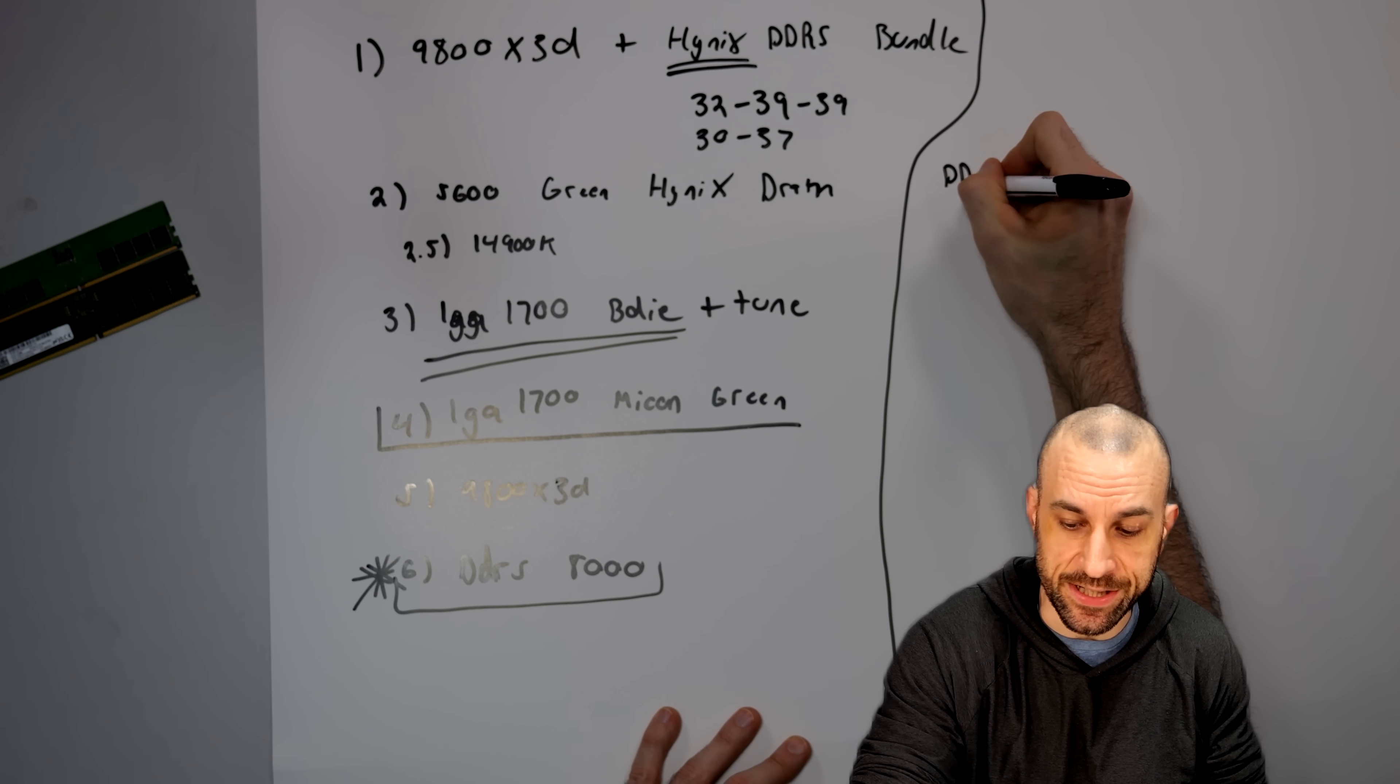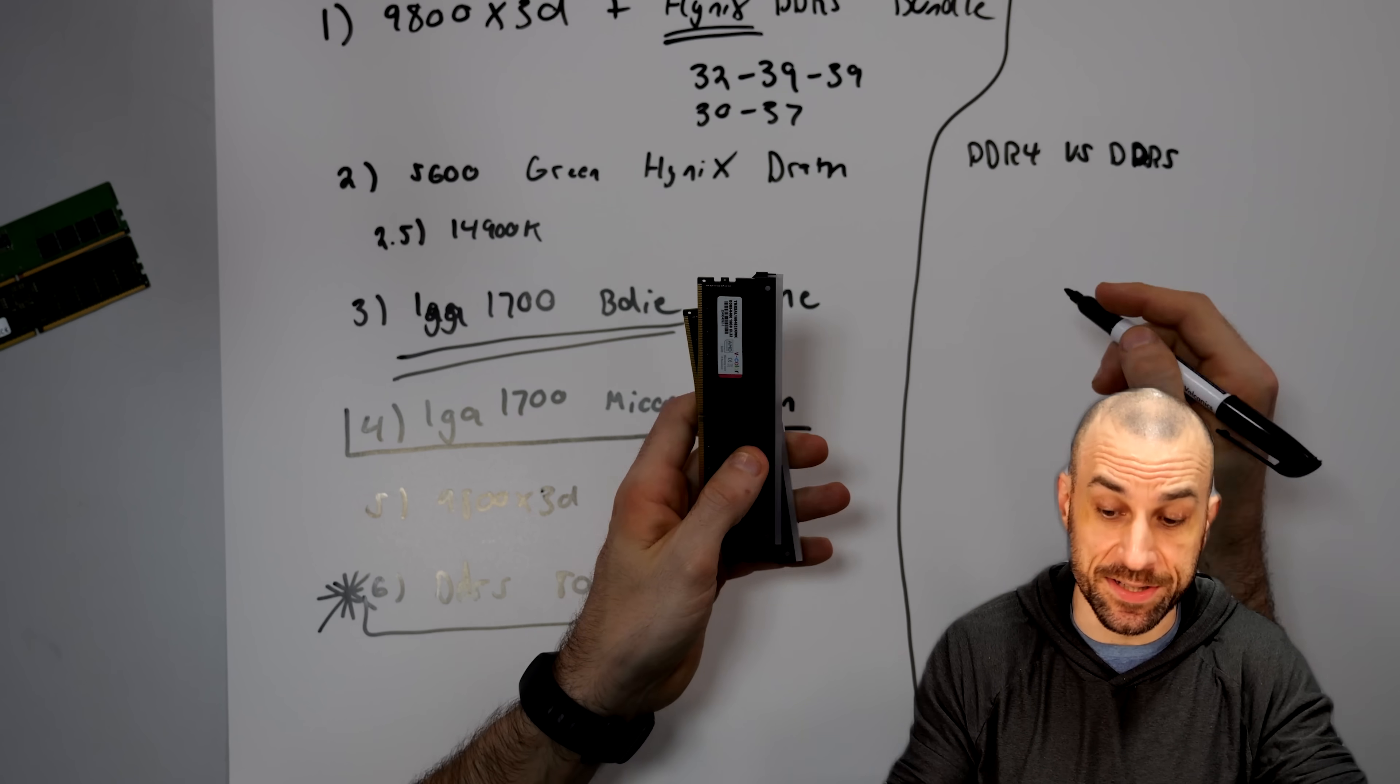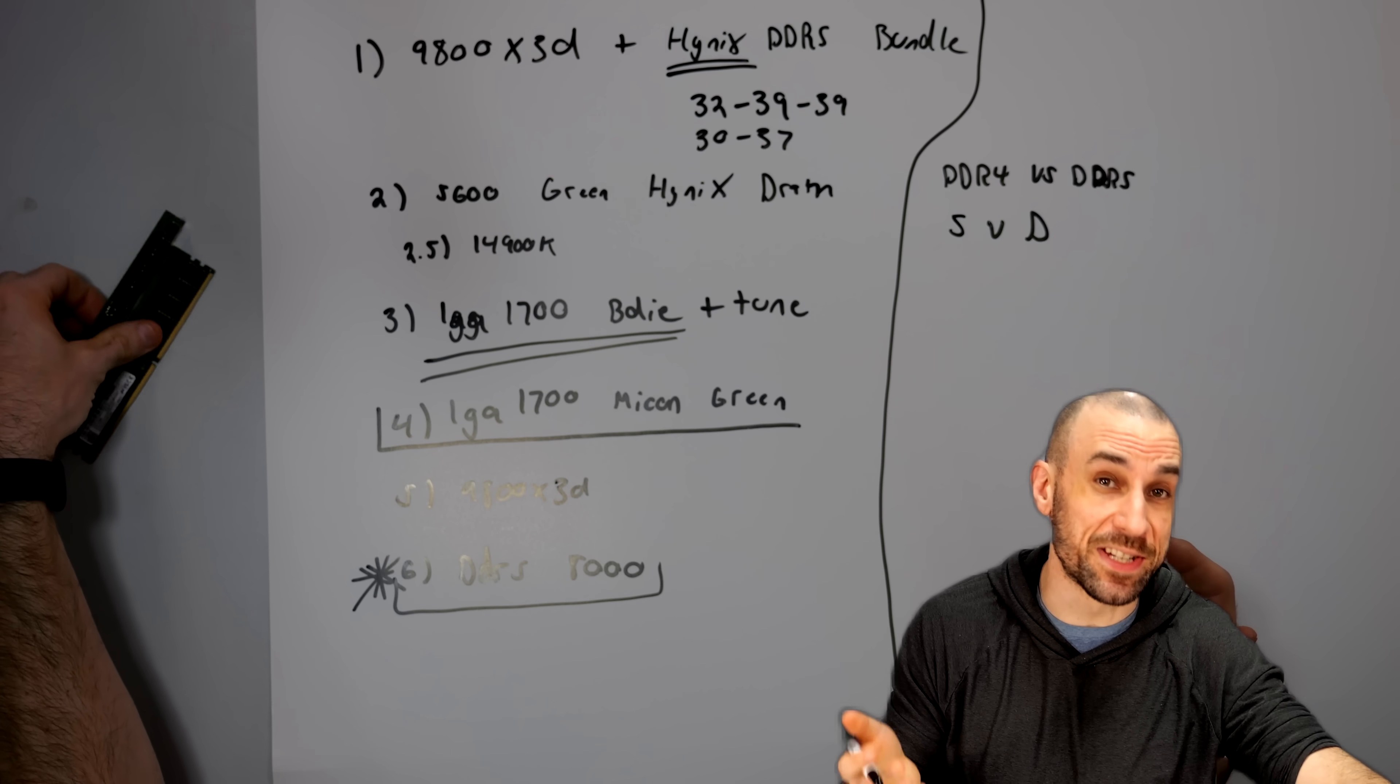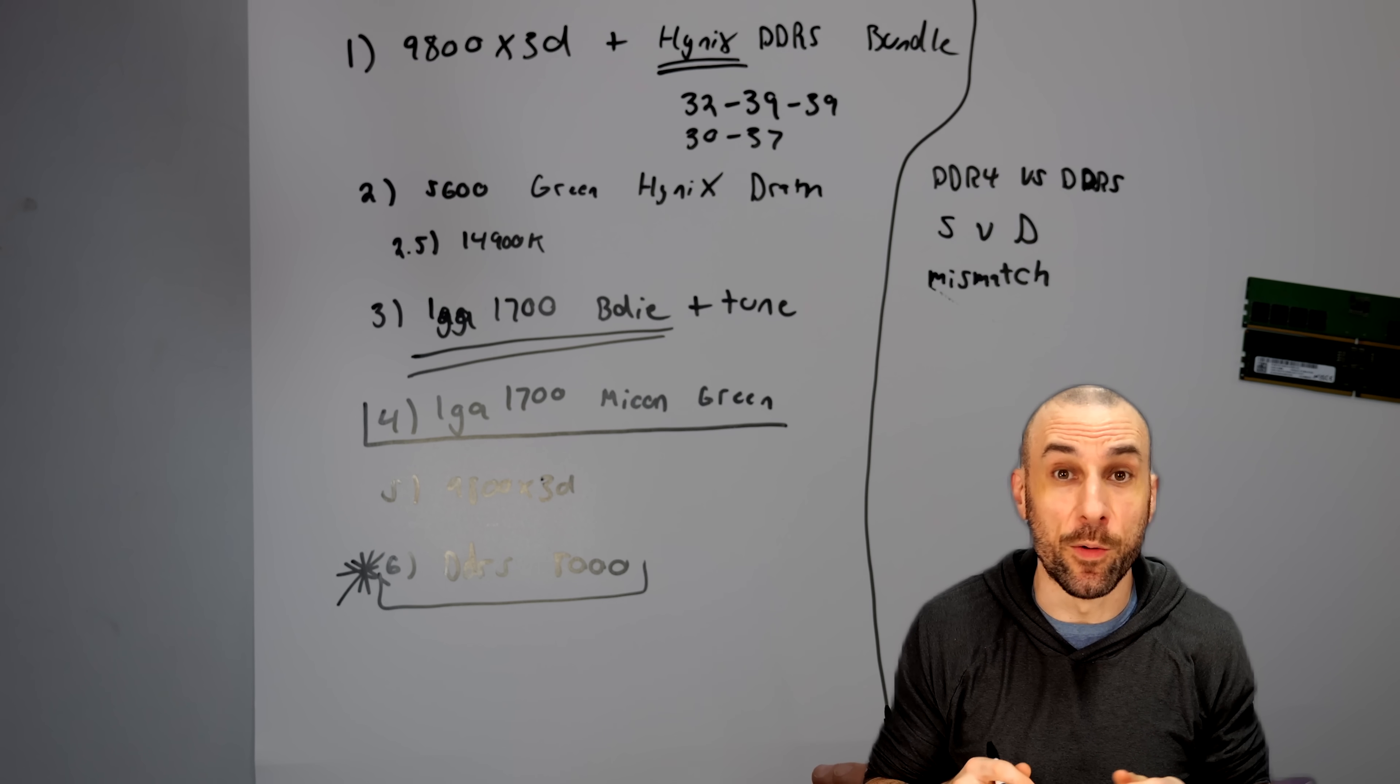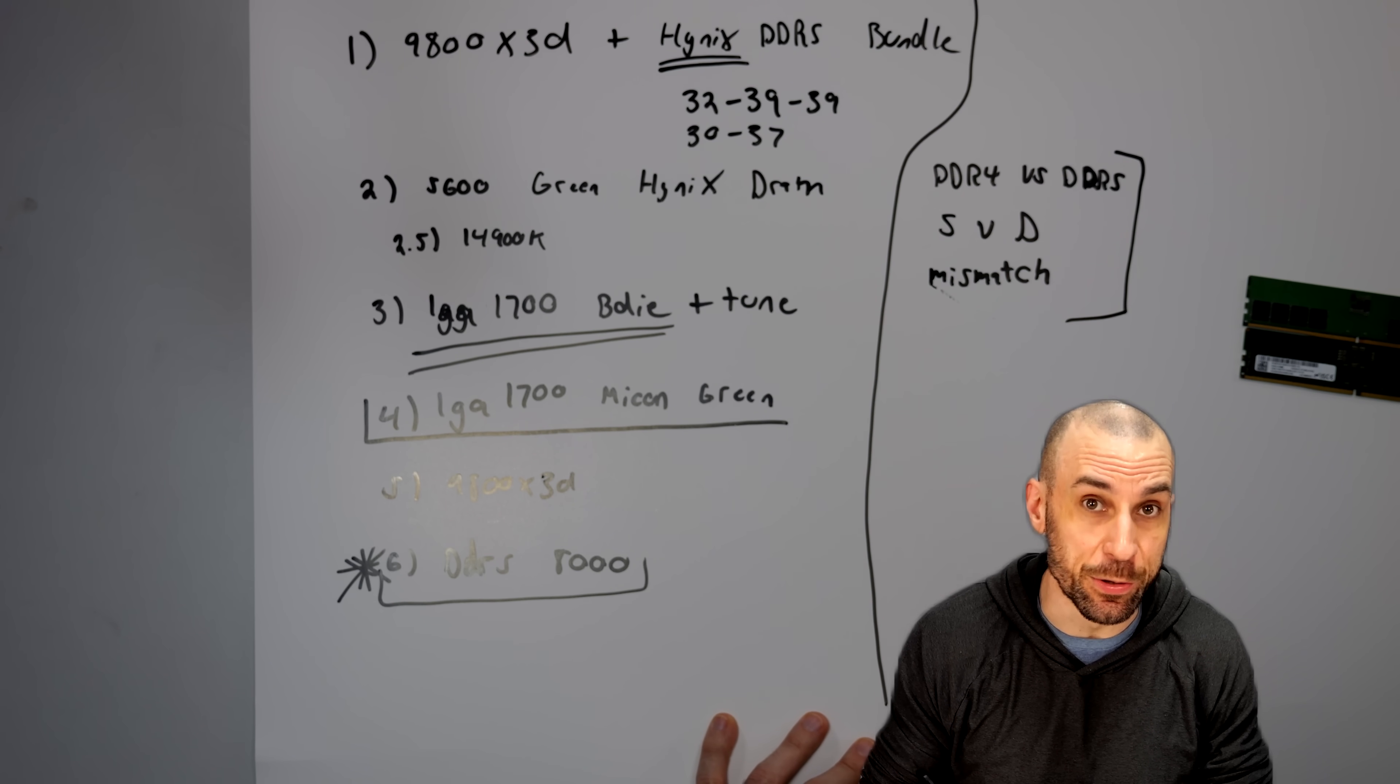So now you guys get to tell me what you want to see next. Do you want to see DDR4 versus DDR5? Or do you want to see single rank versus dual rank? Or do you want to see what happens when you mismatch green sticks and try to overclock them on a 3D chip? Let me know in the comments below which one of these video ideas interests you the most.